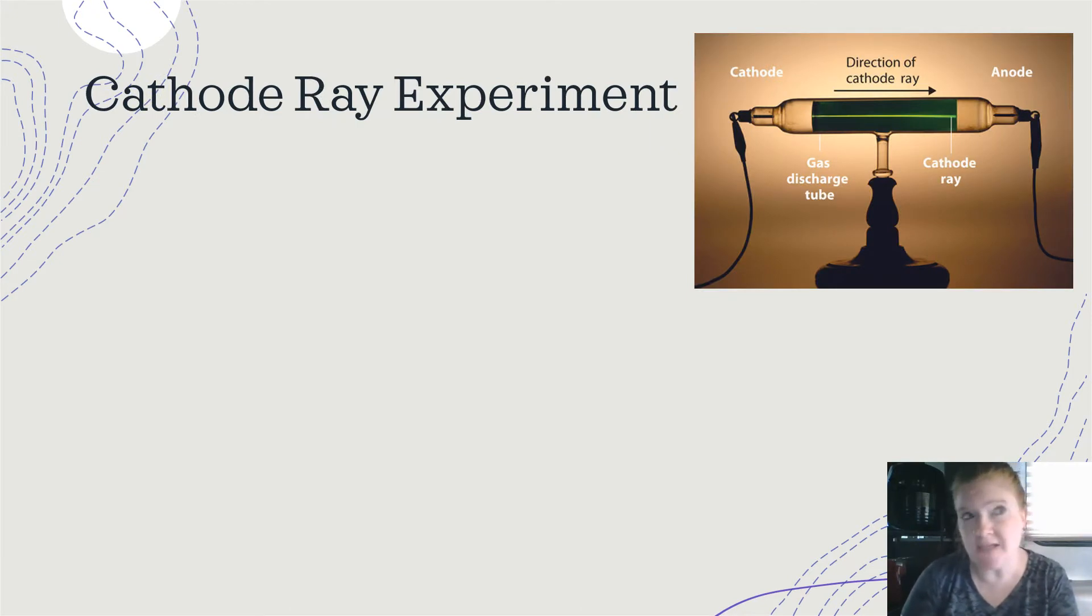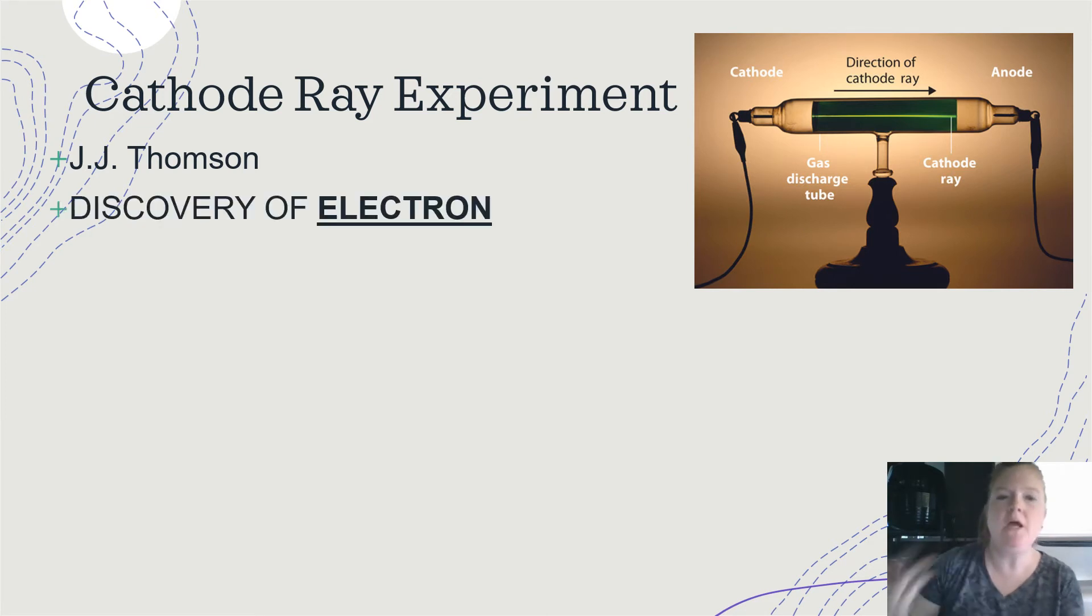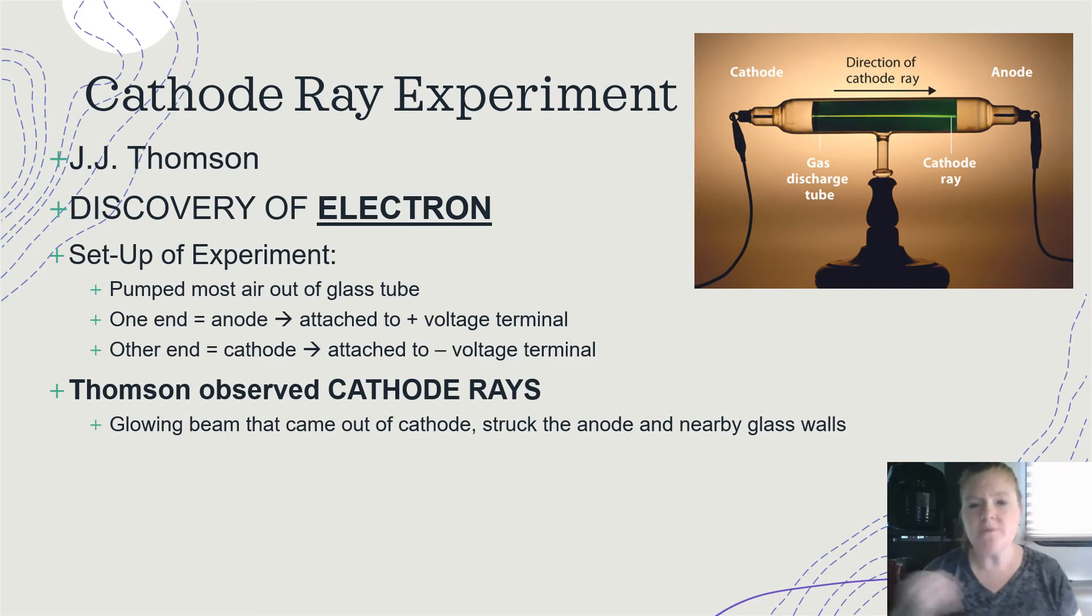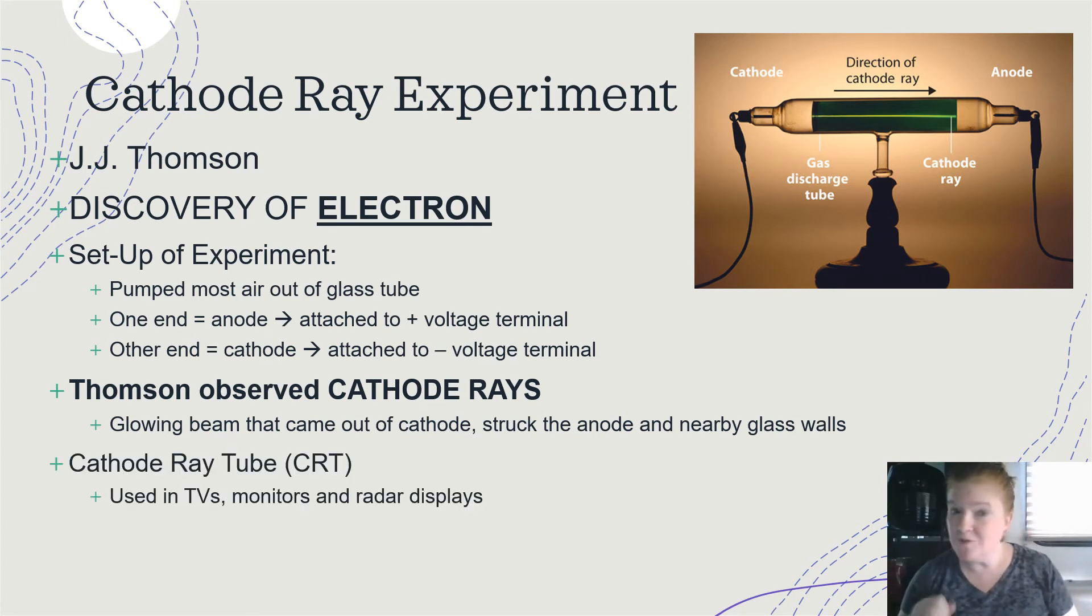All right, how did we get changes to the atomic theory? Well, with experiments. So let's talk about one, the cathode ray experiment. And the name associated with this experiment is JJ Thompson. And JJ Thompson discovered the electron with this experiment. So what was the setup? Take a glass tube, pump most of the air out of it. One end, the anode, which was attached to the positive voltage terminal. The other cathode attached to the negative voltage terminal. You don't need to remember that necessarily, just that it had an anode and a cathode. And what he did was observe the cathode rays. A glowing beam came out of the cathode, struck the anode and the nearby glass walls. Cathode ray tubes are still used today. They're used in TVs, used in monitors and used in radar displays.